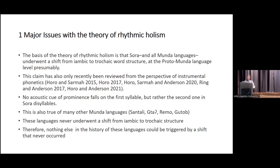A lot of this work is in response to the theory of rhythmicalism that Donegan and Stamp put forward — an alleged shift from iambic to trochaic word structure at the proto-Munda stage, which triggered typological reorderings allegedly making Munda languages the mirror image of Austroasiatic languages of mainland Southeast Asia. This has been subjected to critical review, and what has been revealed is that there are no acoustic cues of prominence on the first syllable, but rather the second one in Sora disyllables. This is also true of Santali, Gata, Ramon, and Kutob, representing the full genetic diversity within the Munda family. The conclusion is that these languages never underwent a shift from iambic to trochaic structure.